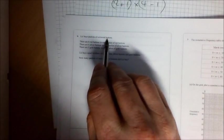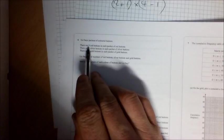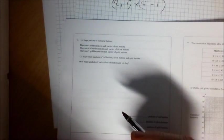In this question about Liz buying packets of colored buttons, she's got eight red buttons in a packet, she's got six silver buttons in a pack of silver buttons, and five gold buttons in a pack of gold buttons.